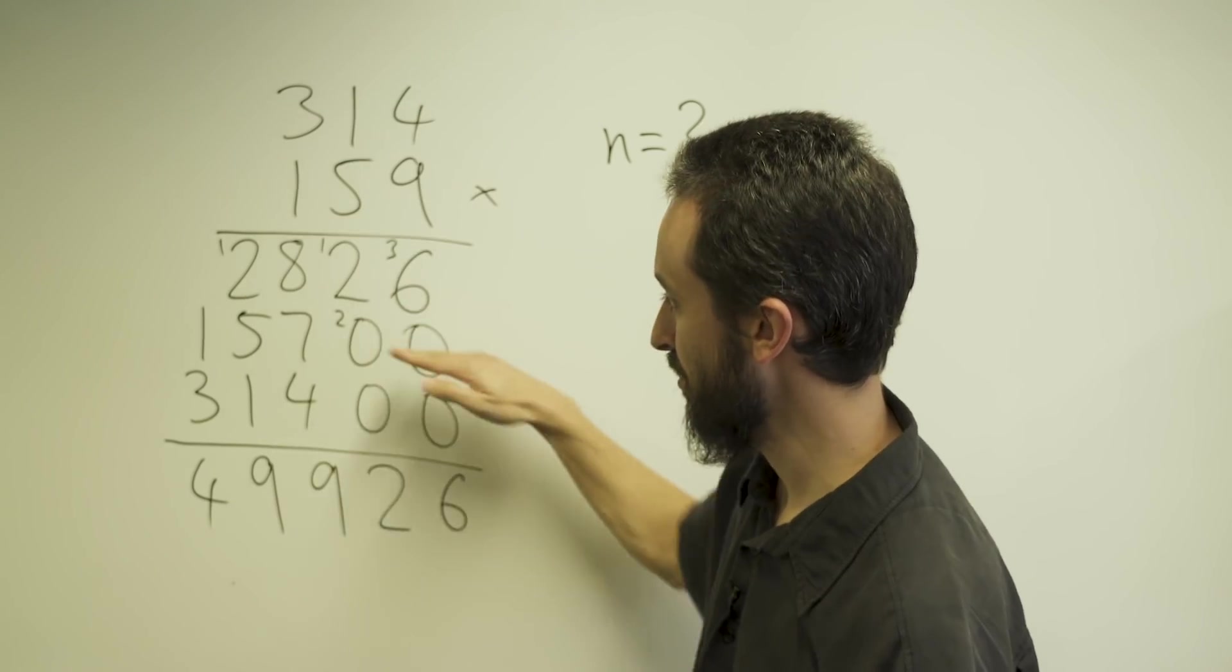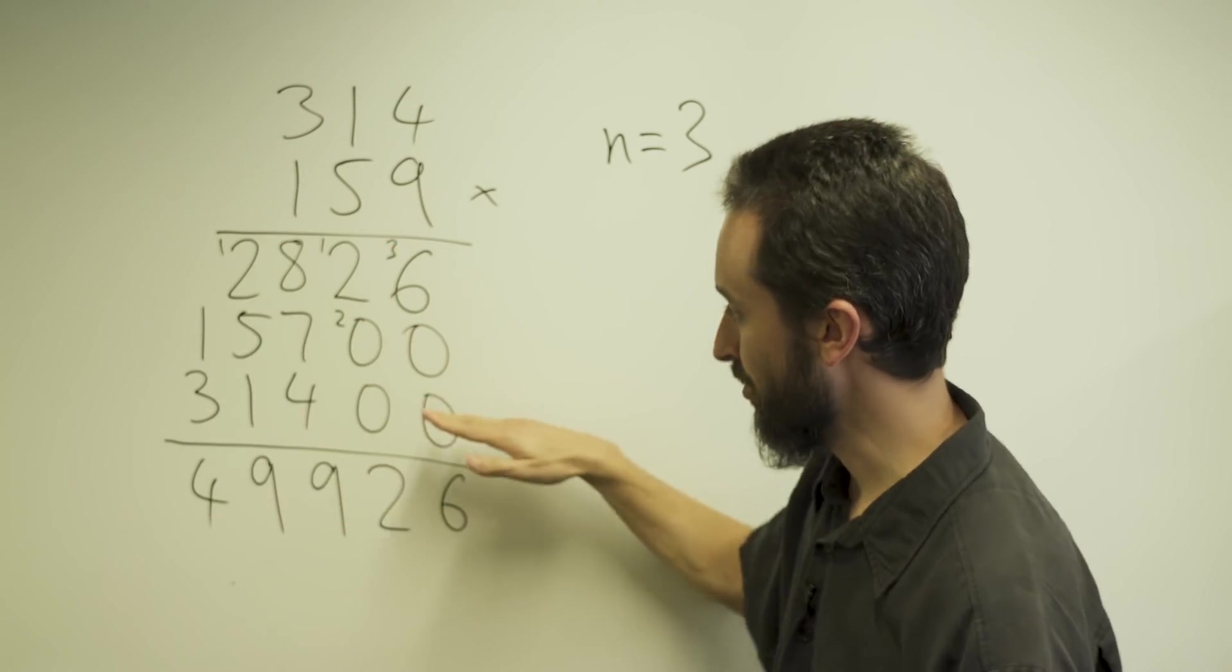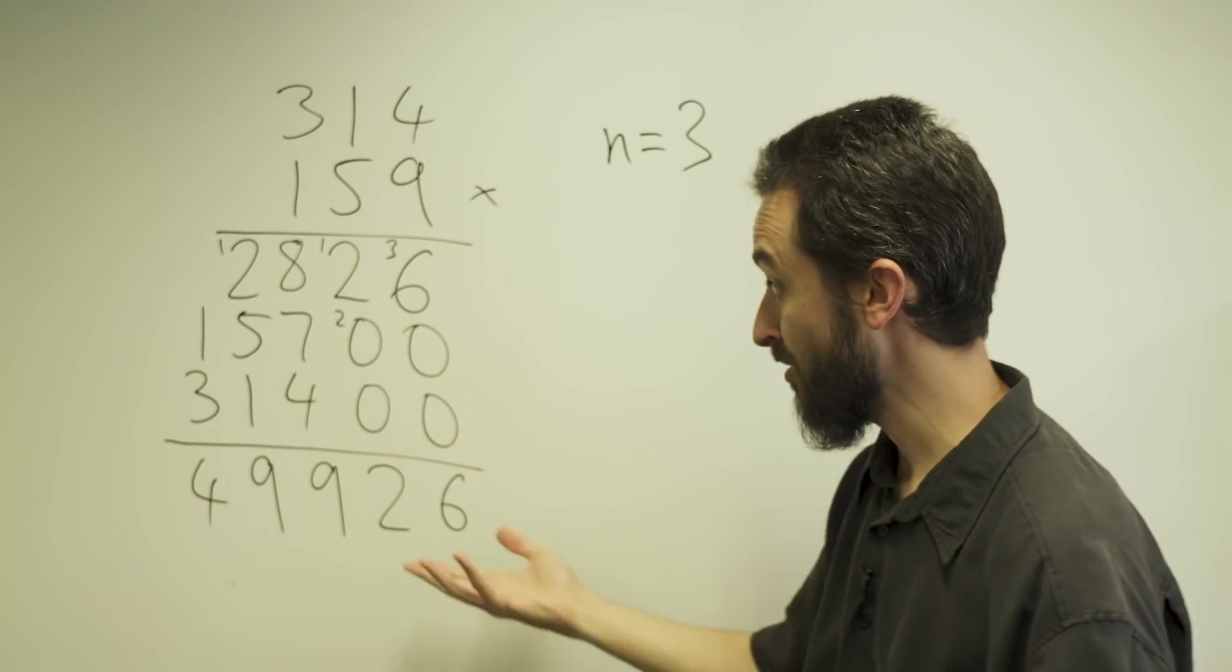I have to do 5 times 4, 5 times 1, 5 times 3. There it is. And then the same for the last digit. Then I add up all the results. We all know how to do this.